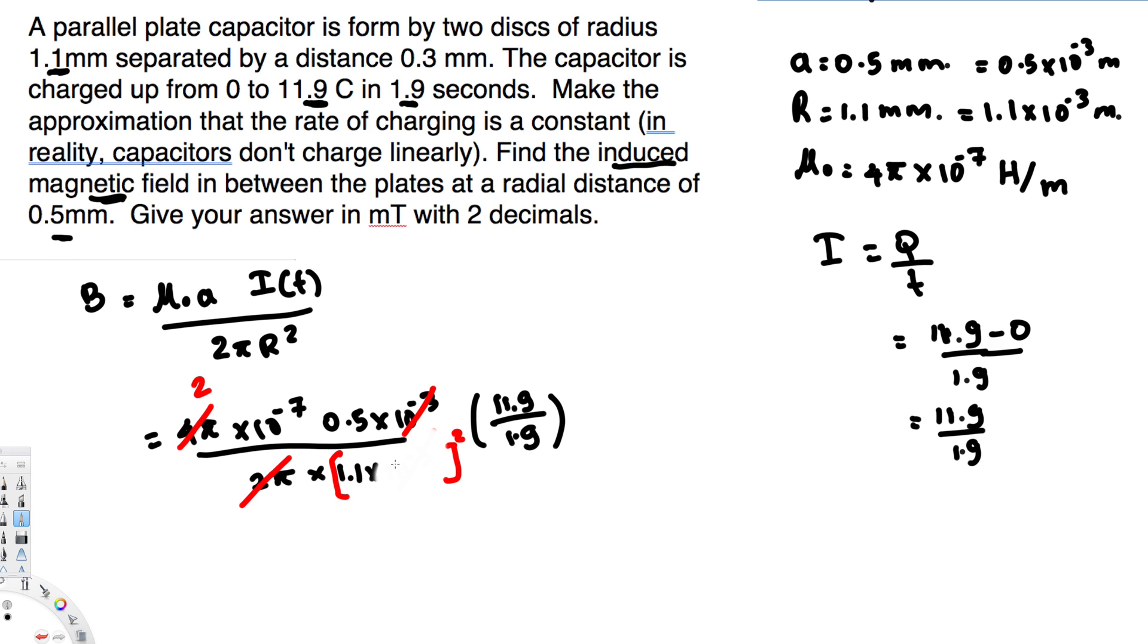This is 10 to the power of minus 3, this is square. This is 2 times 10 to the power of minus 7. 2 times 0.5, that's going to be just 1, and this 10 to the power of minus 3 still remains. If you calculate this one you should get